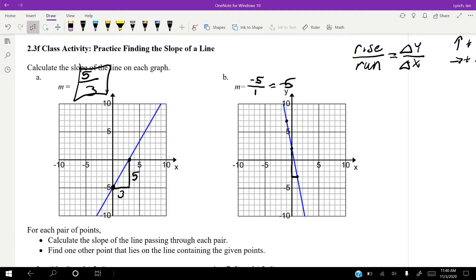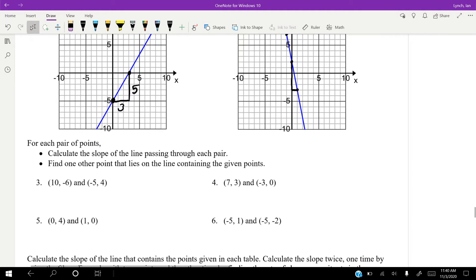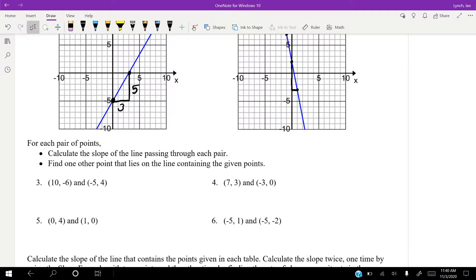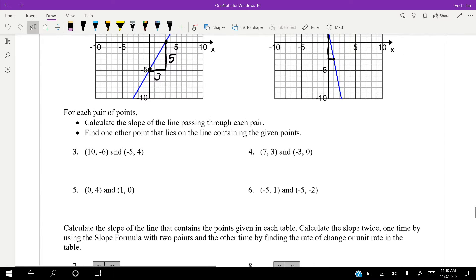All right, so for each pair of points, calculate the slope of the line passing through each pair. Find one other point that lies on the line containing the given points.